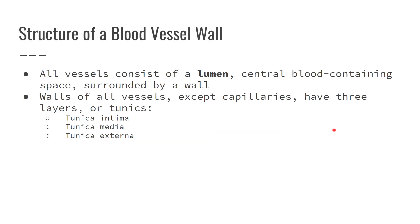All blood vessels have a lumen — that's the hole inside the blood vessel where the blood actually flows through. All vessels, except for capillaries, have three tunics: the tunica intima, tunica media, and tunica externa.